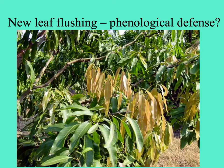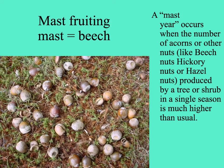Here's a mango tree flushing a lot of new leaves all at one time. And here's a pile of acorns on the ground — a mast fruiting event, which occurs every few years in South Florida from the live oaks. Mast fruiting is named after the beech tree, called the mast tree in England. A mast year, when fruit production is much higher than usual, causes a rise in herbivore numbers and a subsequent plunge, allowing escape in future years.